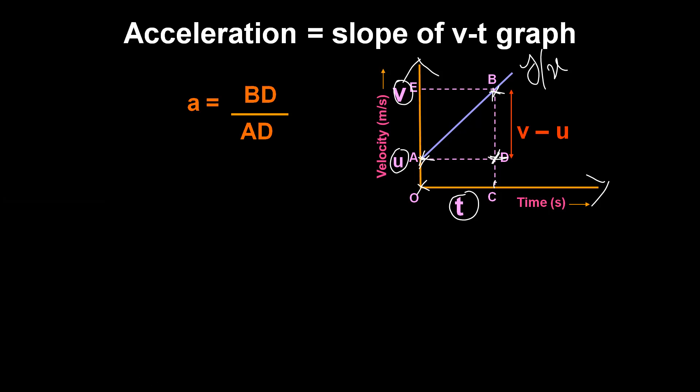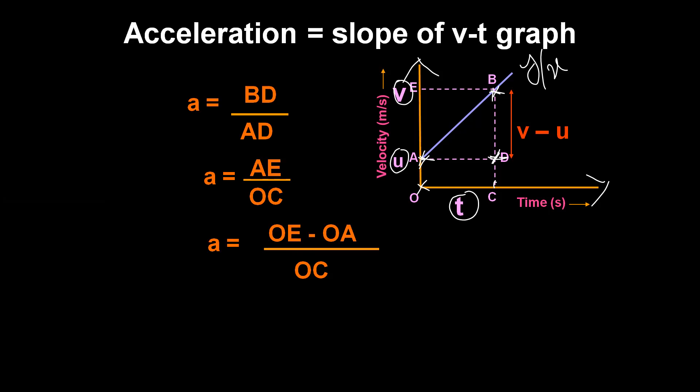The length BD on the y-axis equals AE minus OE. The length AE corresponds to the final velocity V, and the length OE corresponds to the initial velocity U. So BD equals AE minus OE, which equals V minus U. The length OC on the x-axis corresponds to the time T.